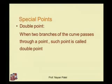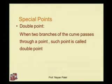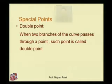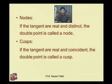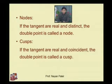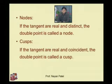Now, double point means special point. There are three main types: nodes, cusps, and conjugate points. A double point occurs when two branches of the curve pass through a point. If the tangents at that point are real and distinct, the double point is called a node.